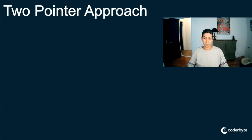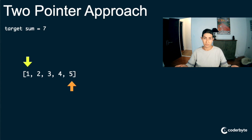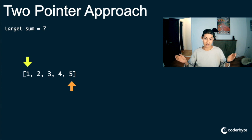This is the two-pointer approach. Here's our target sum and our array. What we can do is initialize two pointers at either end of the array: the first pointer at index zero and the second pointer at the end of the array — that's index four. How do we determine which pointer to move? Because this is a sorted array, we can take advantage of that and add the two elements at either end.